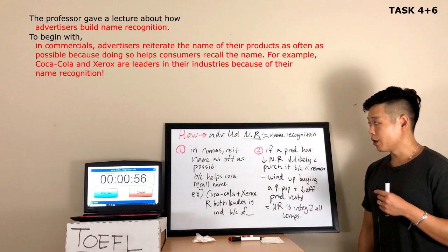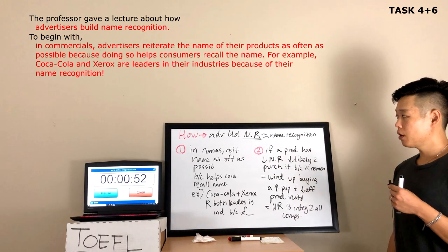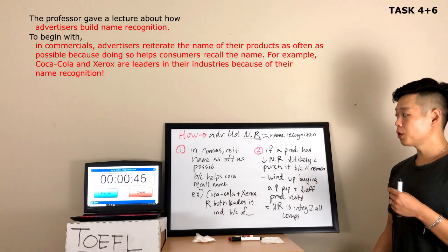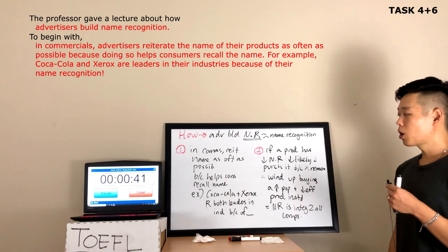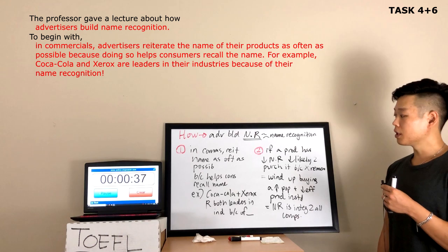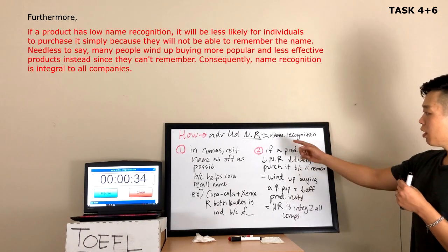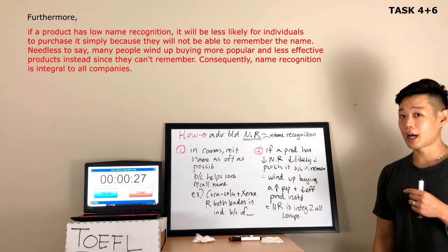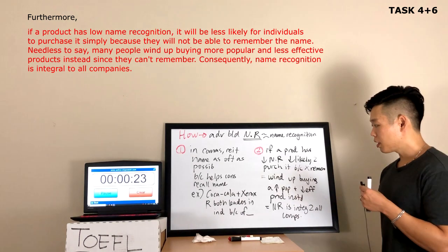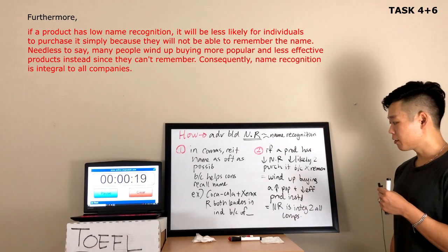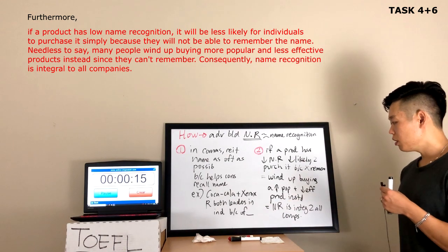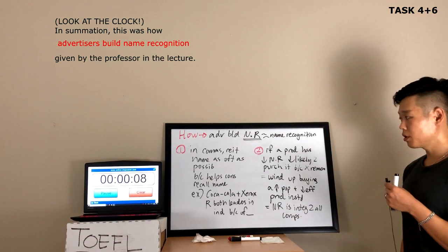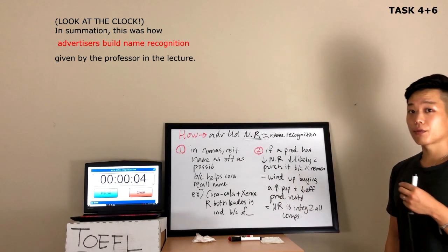The professor gave a lecture about how advertisers build name recognition. To begin with, in most commercials, advertisers reiterate the name of their products as often as possible because doing so helps consumers recall the name. For example, Coca-Cola and Xerox are both leaders in their industries because of their name recognition. Furthermore, if a product has low name recognition, it will be less likely for individuals to purchase it simply because they will not be able to remember the name. Needless to say, many people wind up buying a more popular and less effective product instead since they can't remember. Consequently, name recognition is integral to all companies. In summation, this was how advertisers build name recognition, given by the professor in the lecture. Thank you for your time and consideration.